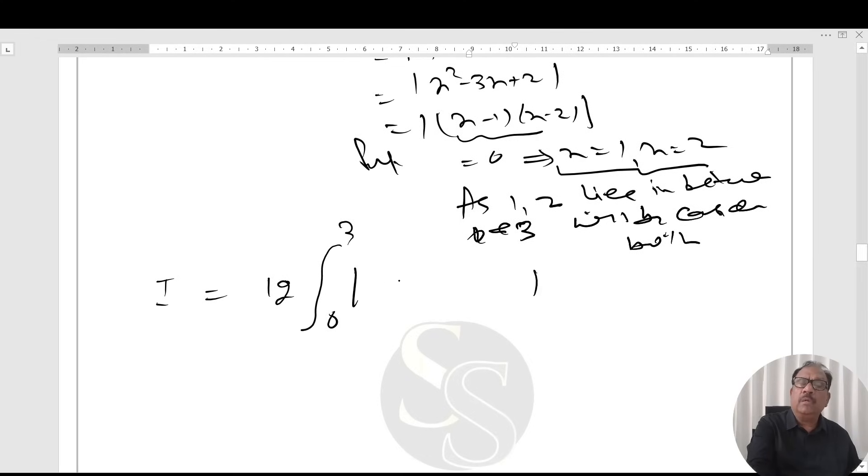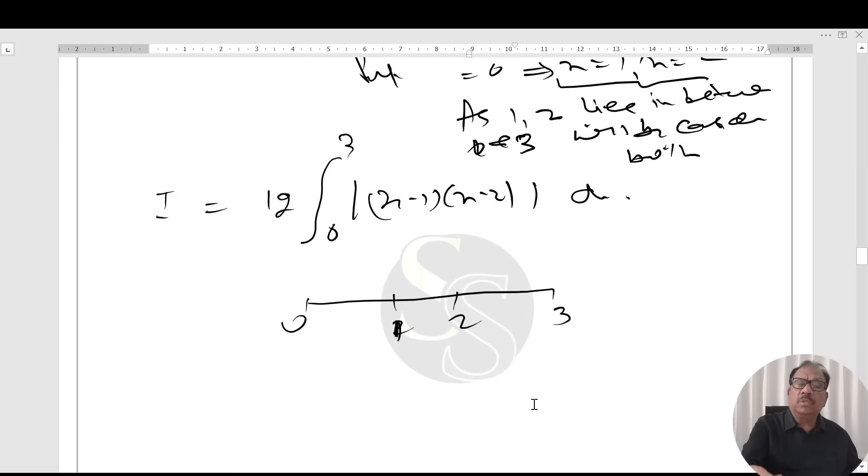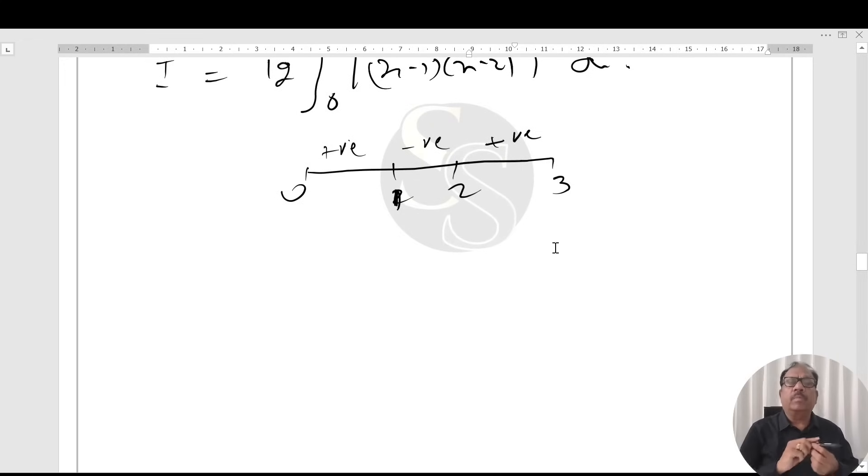The question is integral from 0 to 3 of 12 modulus of (x minus 1)(x minus 2) dx. On the number line: 0, 1, 2, 3. If we put any number between 0 and 1, we get negative times negative equals positive. Between 1 and 2 we get negative, between 2 and 3 we get positive. Using the breakup property: 0 to 1, 1 to 2, 2 to 3.